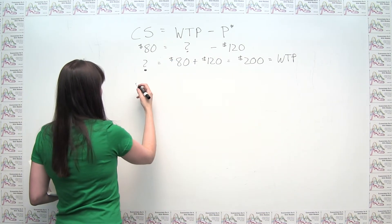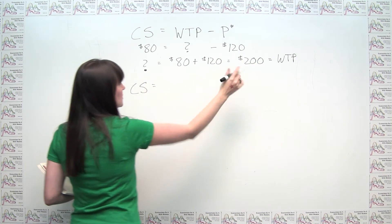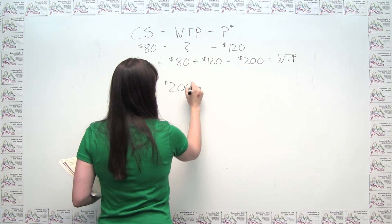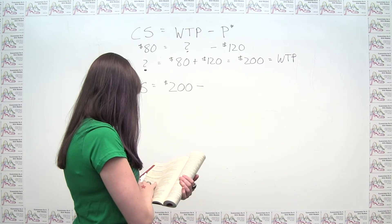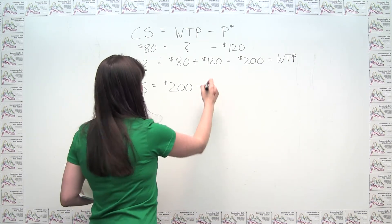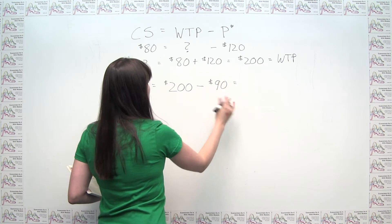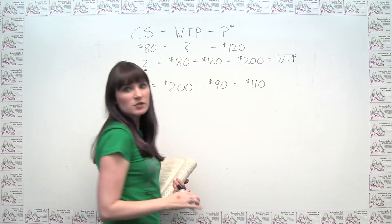And here this time we can just use the formula going forward and we can say consumer surplus is her willingness to pay of $200 minus now the sale price of $90. And this leaves Melissa with $110 of consumer surplus.